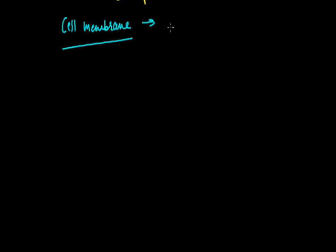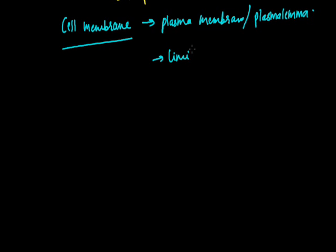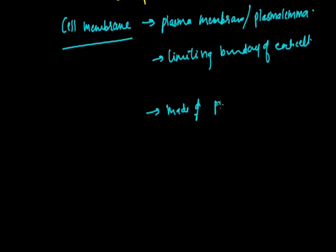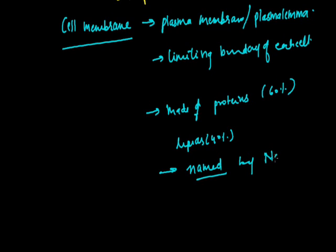This was all about the cell wall, which is present only in plant cells. Let us switch to the cell membrane. The cell membrane is also called the plasma membrane or plasmalemma. It is the limiting boundary of each cell, separating the cytoplasm from its surroundings. It is found in both plant and animal cells, and it is the outermost covering in animals and lies below the cell wall in plants. It is made of 60% lipids and 40% proteins, where proteins are sandwiched between a bilayer of lipids. The plasma membrane was named by a scientist named Nägeli.